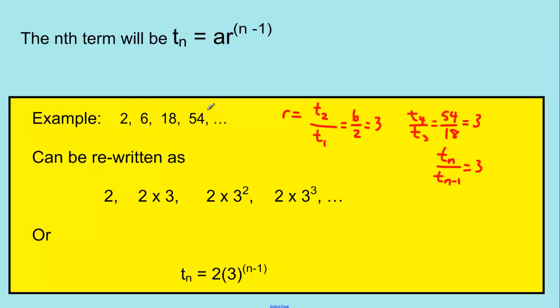So going back to 2, 6, 18, and 54, we can rewrite this as starting with 2 as the first term. The second term is 2 times 3, or 3 is the r. The third term is 2 times r squared, or 2 times 3 squared. And then the fourth term is 2 times 3 to the exponent 3. Sort of the exact same thing we were talking about before. So our general term, Tn, is equal to a times r to the n minus 1, which is 2 times 3 to the n minus 1.